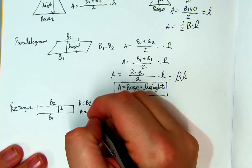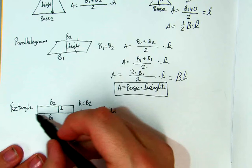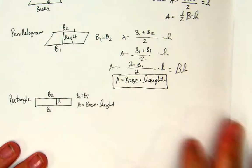So my area would simplify down to base times height, or we also call it length times the width. But if we keep everything consistent, we get base times height.